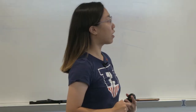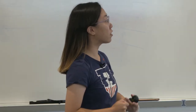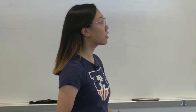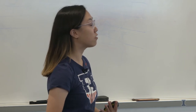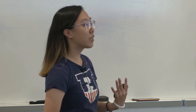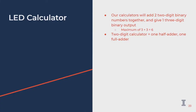We're going to start talking about the calculator that we're going to be building, now that we know the fundamentals about the half adder and the full adder. We're going to be making a calculator that can add two two-digit numbers together. Our output is going to be three digits due to the carry from that final digit coming out.